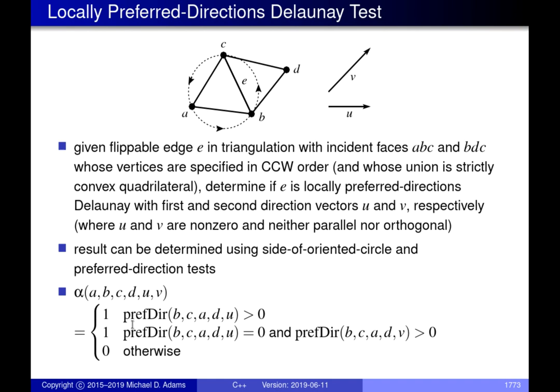If BC is preferred over AD — meaning CB is already in the triangulation and its slope is closer to U — then we have something that looks like a valid locally preferred direction Delaunay triangulation. If instead CB and AD both have the same angular difference compared to U, meaning we have a tie, then the preferred direction equals zero.